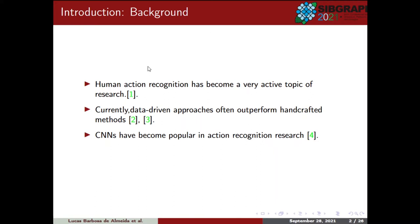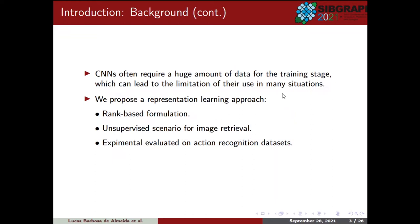Recently, most of the successful results on many of these applications rely on deep learning techniques, which have gained a notable reputation on diverse domains, including image retrieval, object classification, and detection. Convolutional neural networks, CNNs, have become popular, particularly due to their ability in handling large amounts of data and advances in hardware technology. Notably, CNNs tend to require a minimal level of preprocessing when compared to other image classification algorithms, and yet achieve state-of-the-art results. However, despite such advantages, CNNs often require a huge amount of data for the training stage, which can lead to limitations of their use in many situations.